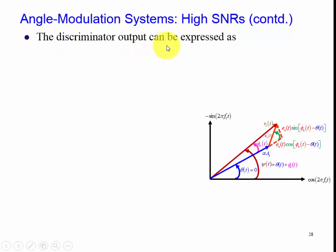Our discriminator output can be expressed for the phase modulated case as K_PD times psi of the angle. So if this is going to be a voltage signal and this is in radians, then this must be volts per radians.